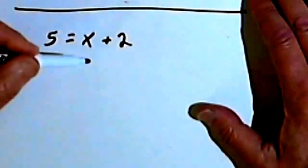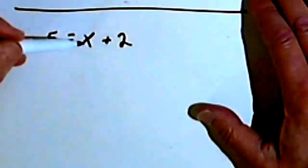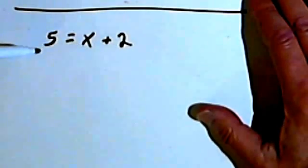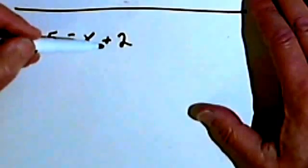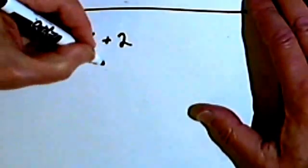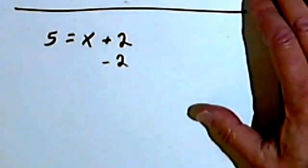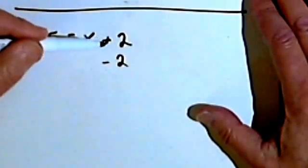That doesn't mean we have to get the x on to the left side of the equation. So the easiest way to get the x by itself over here would be to just get rid of the 2. So we'll get rid of the 2 by subtracting 2 from the right side of the equation.